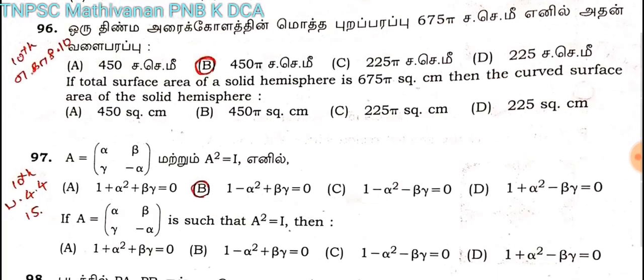A equals ab. That's it. A cube equals 1. That's why 1 minus a square plus b equals 0.